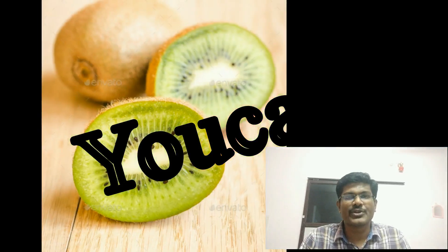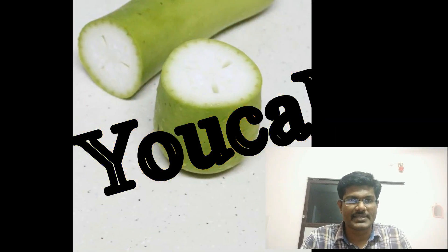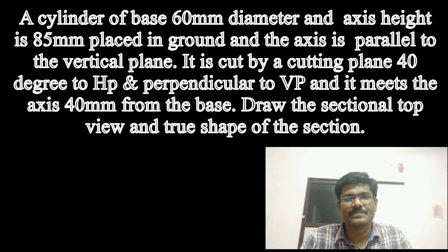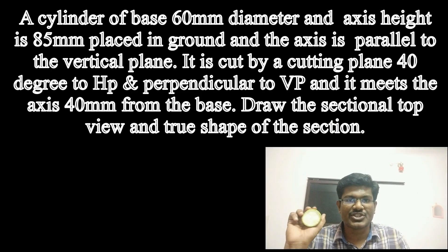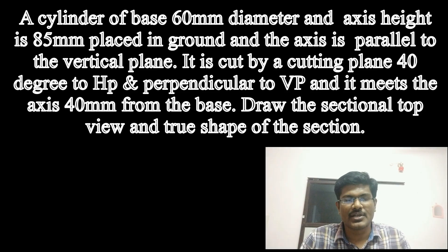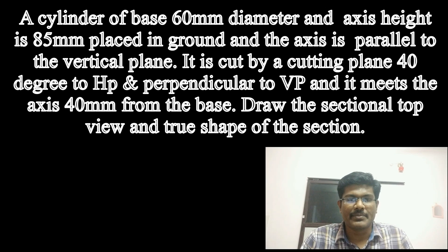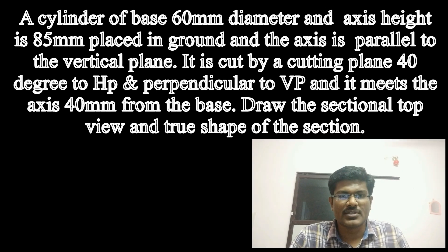Welcome guys. Today we are going to see section of solids. First I am taking a cylinder as an example. Let's see the problem. A cylinder of base 60 mm diameter and axis height is 85 mm, placed on the ground and the axis is parallel to the vertical plane. The cutting plane is 40 degrees to HP and perpendicular to VP, and it meets the axis 40 mm from the base. Draw the sectional top view and true shape of the section.